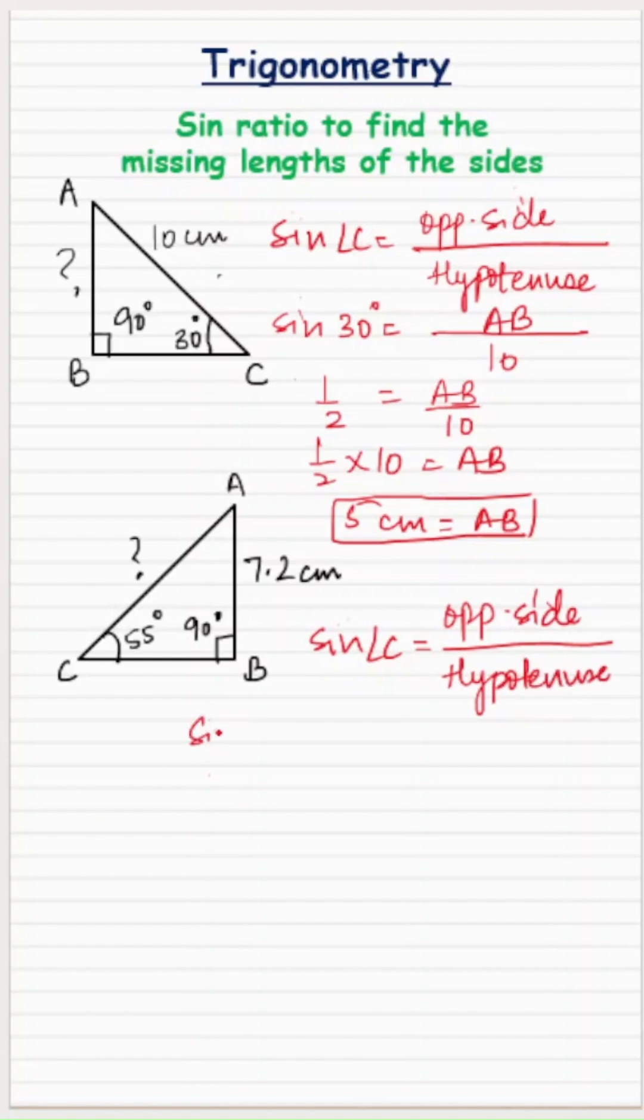So sine of angle C, what is angle C? It's 55 degrees. So sine of 55 degrees equals the opposite side AB over the hypotenuse AC which is missing. Now sine of 55, if you put this in the scientific calculator you will get sine 55 as 0.82 up to two decimal places, and AB is 7.2 over AC. Now this AC will shift to that side, equals 7.2 divided by 0.82 in the denominator.